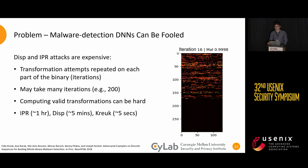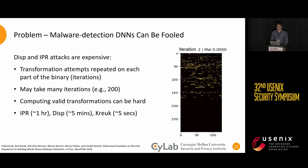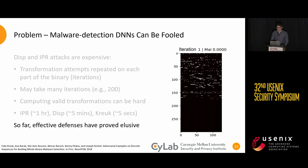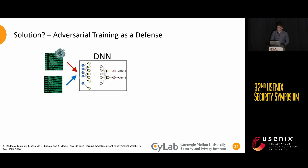Now that we've introduced some attacks and discussed their computational costs, we'll talk about how to defend against them. We and others have tried a few different potential defenses, but in general they haven't worked out. The point of this paper is to try adversarial training in this domain, which works by using evasive binaries as training data to teach the classifier to stop being fooled by these attacks.